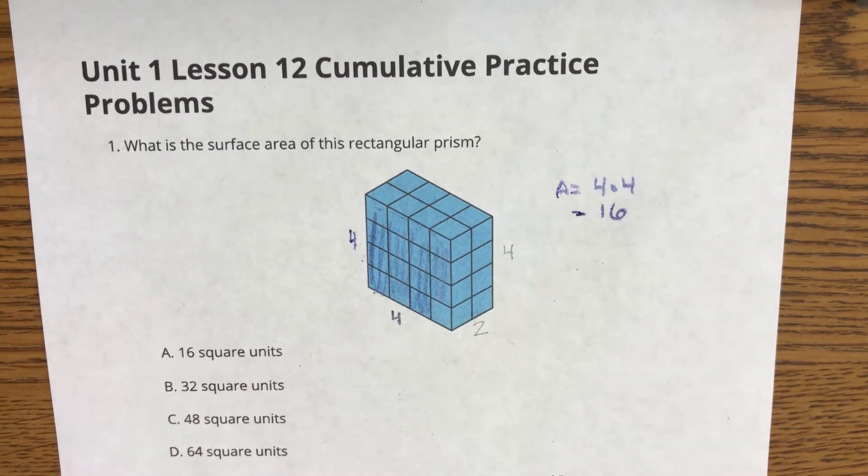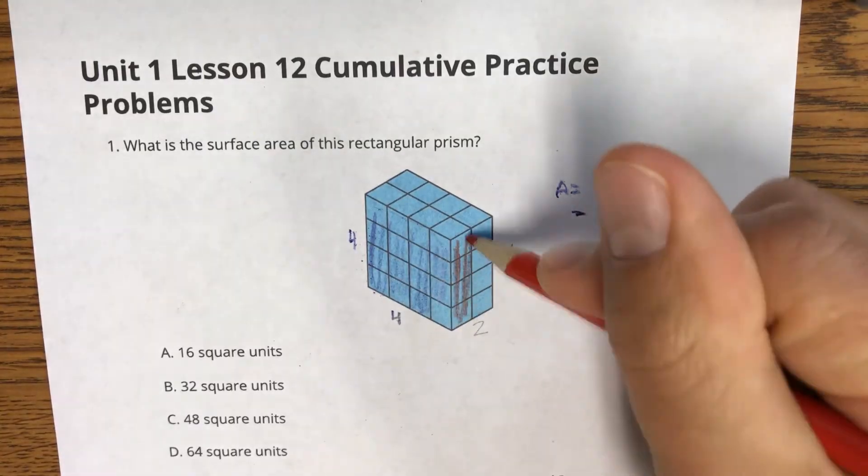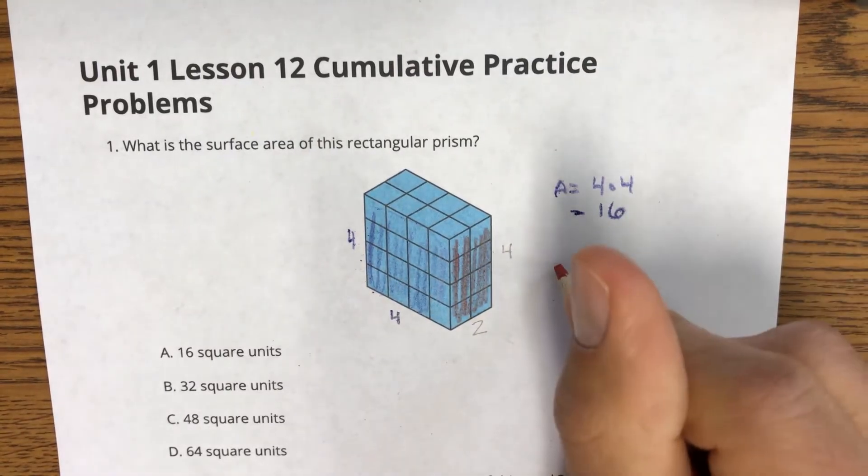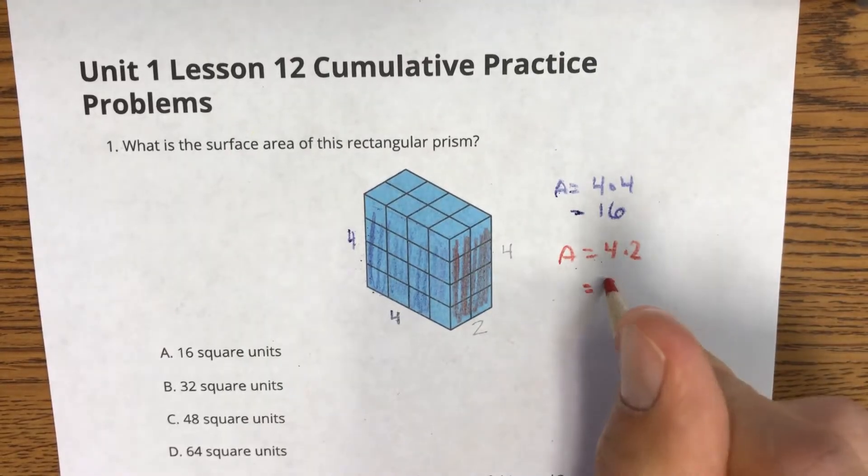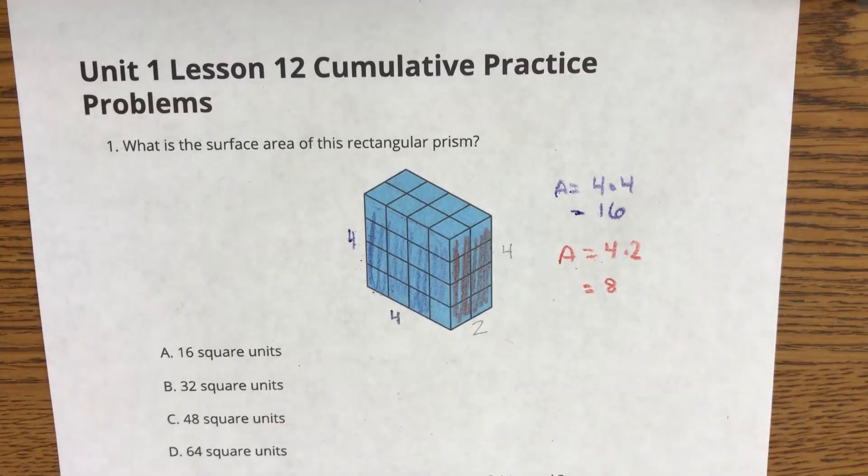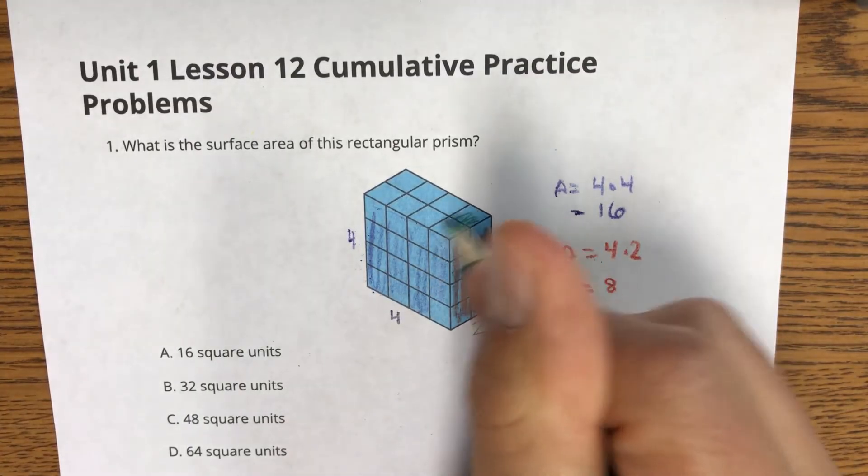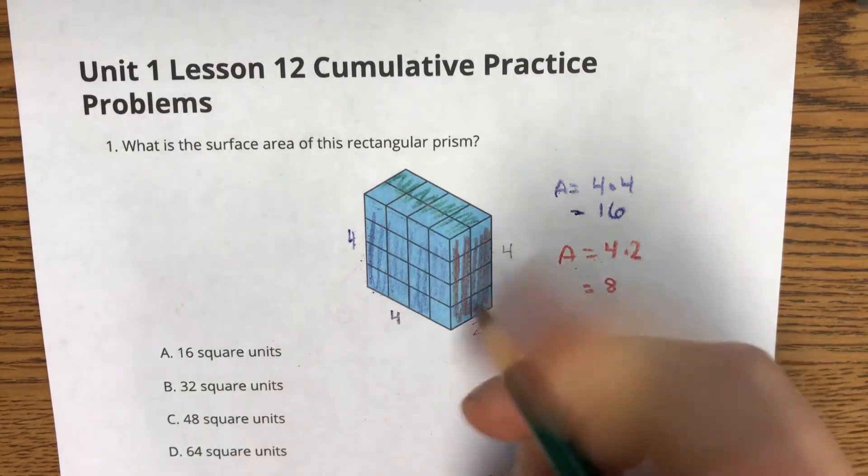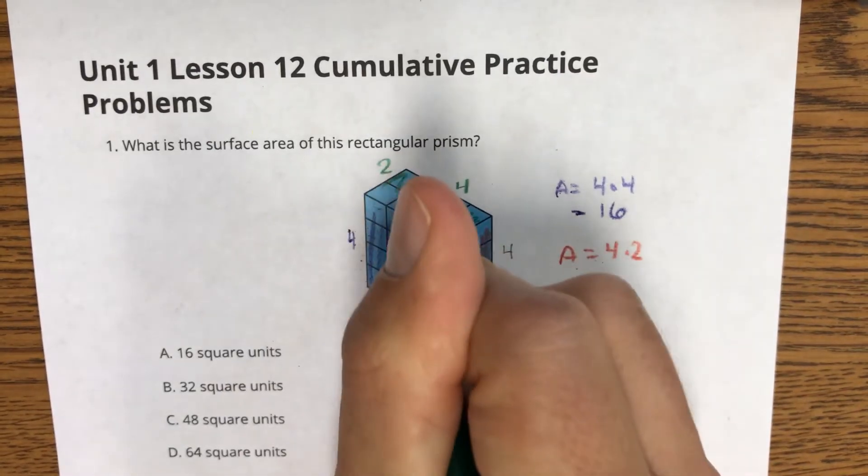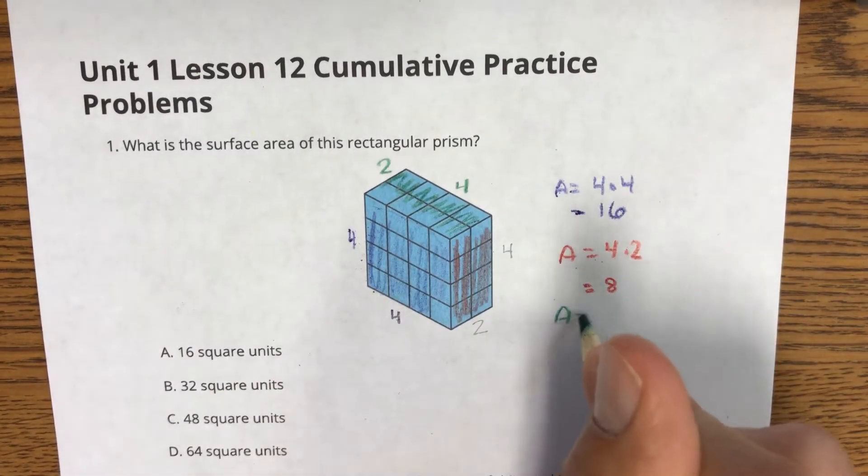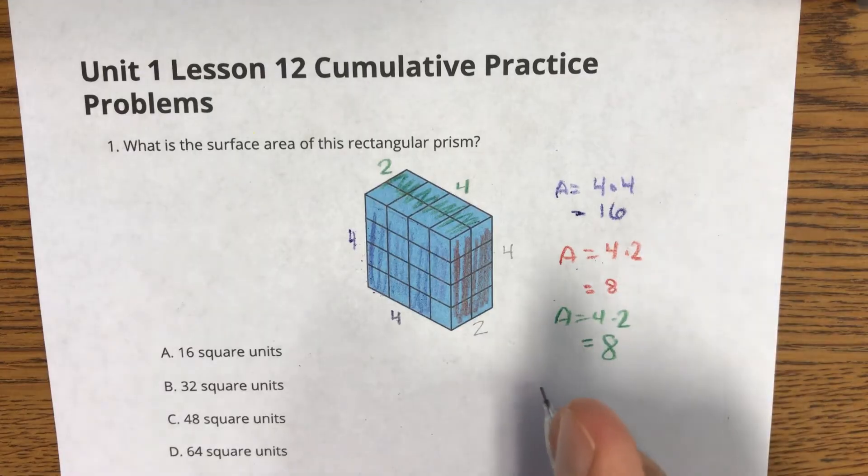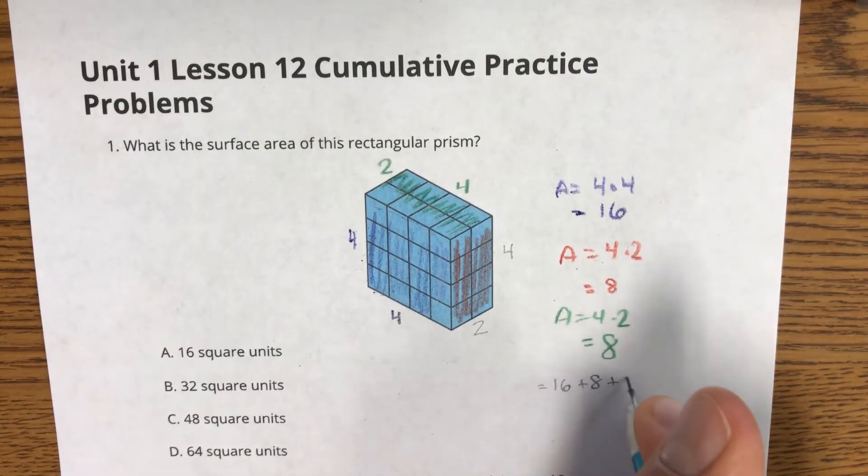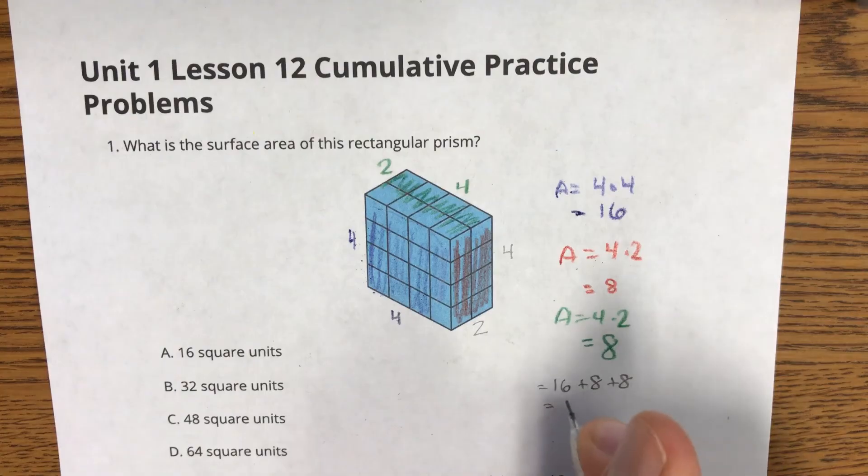Now, if I decide to focus on this side here, that area is going to be 4 times 2, which is 8. Then I have my last side up top, or at least my third side. And that's 4 by 2, which is going to be 8 there. Now, when I add those three faces up, I get 16 plus 8 plus 8, which is 32.